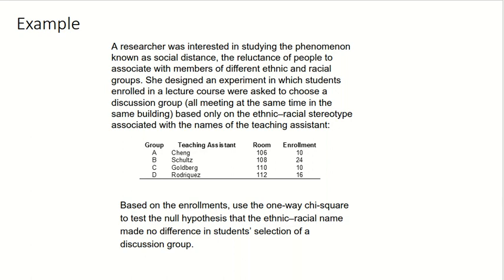You can see the teaching assistant names here: Chang, Schulz, Goldberg, Rodriguez, which imply different ethnicities. Based on the enrollments, using a one-way chi-square test, are there differences? And can we generalize from this sample to a broader population?